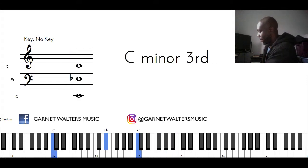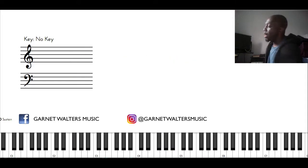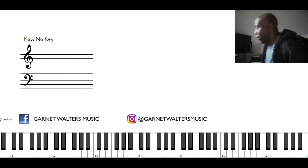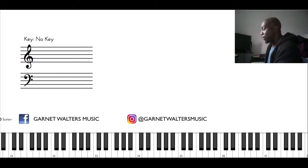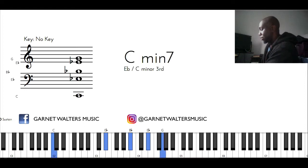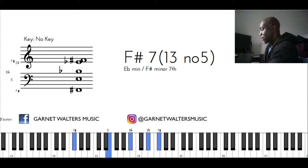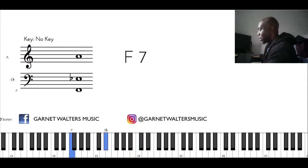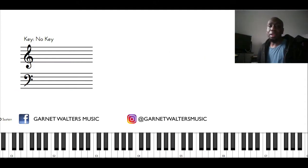Once I get that, I start to experiment and figure out what other chords it could go with. I can do something like a tritone substitution, meaning that instead of playing C minor, I can play an F dominant 7 chord and then go to F7. It helps to reinforce the line, but it also helps you to open up what's going on harmonically.